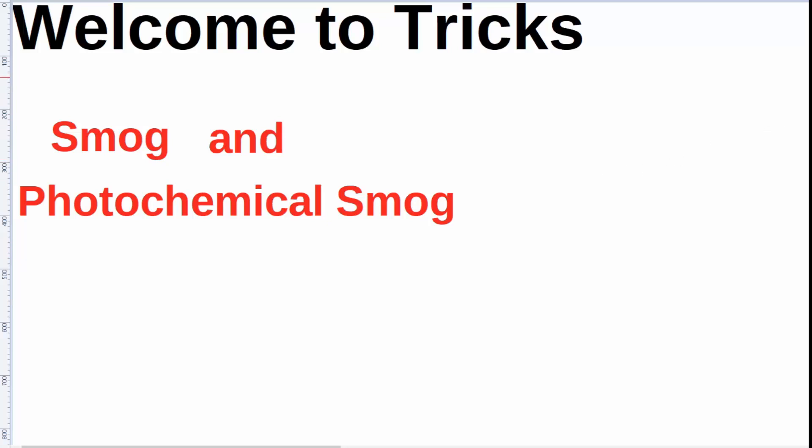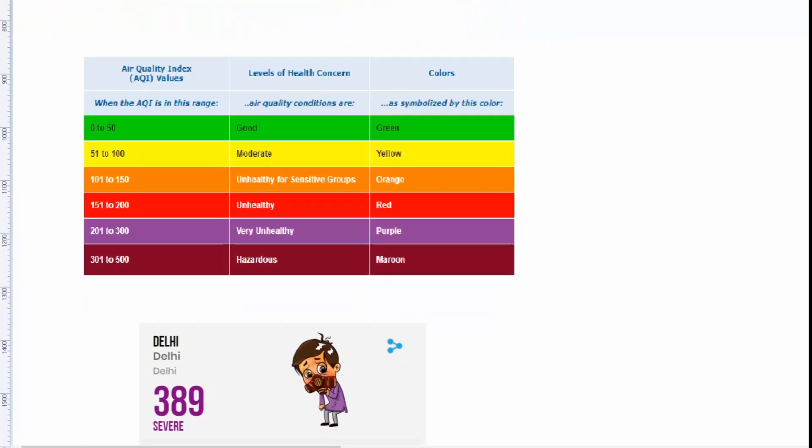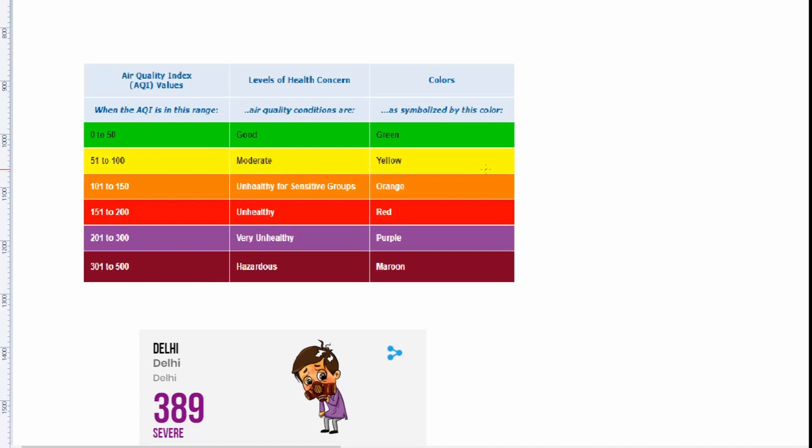I have already made a video on air quality index, you can watch that video, link will be in the description. According to AQI, the 0 to 50 level indicates good level of air, while 51 to 100 indicates moderate level, 101 to 150 indicates unhealthy, while 301 to 500 indicates hazardous level.